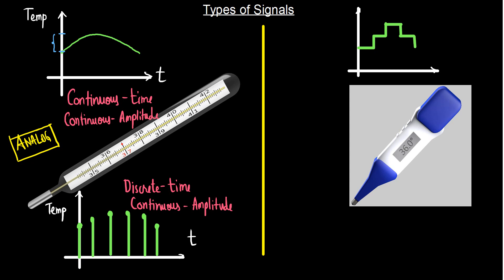The resultant graph shows sudden jumps because middle values are unavailable for reading. For example, if one value is 36 degrees Celsius and another is 36.1 degrees Celsius, the middle value 36.05 is unavailable. So there are only some discrete set of values. The time here is continuous but the temperature is a discrete quantity — so it is continuous time with discrete amplitude.